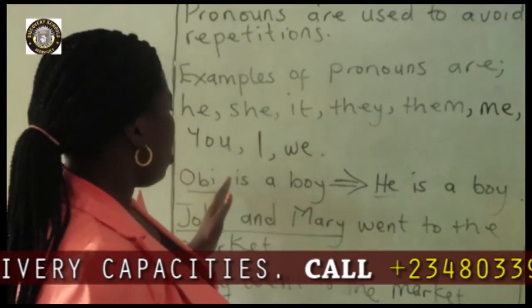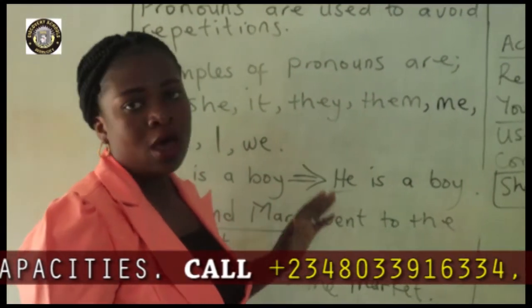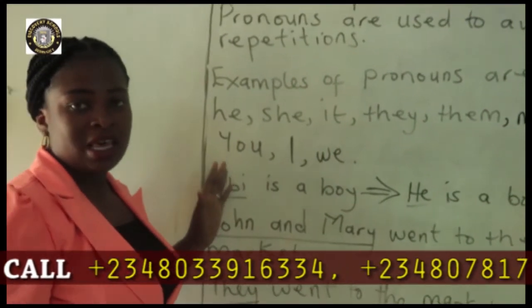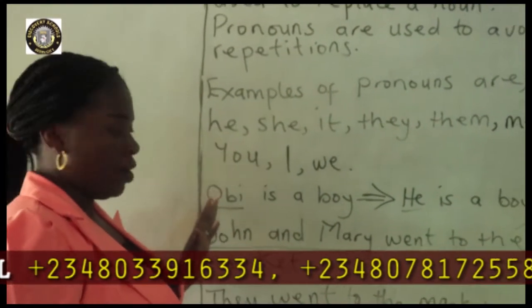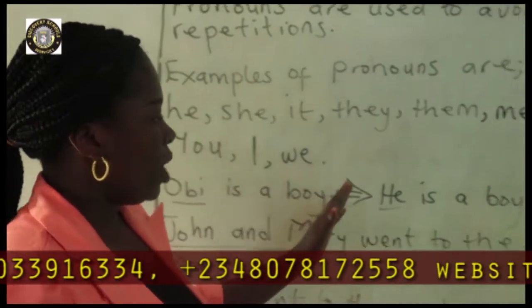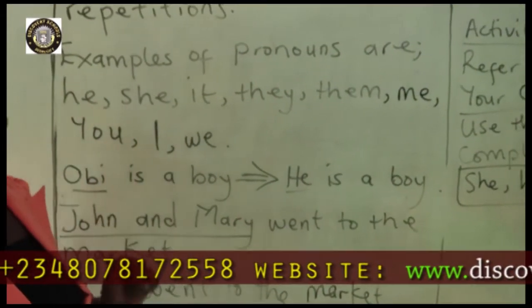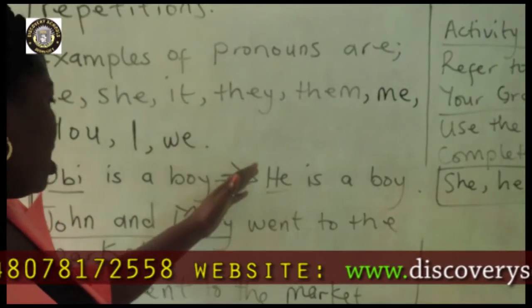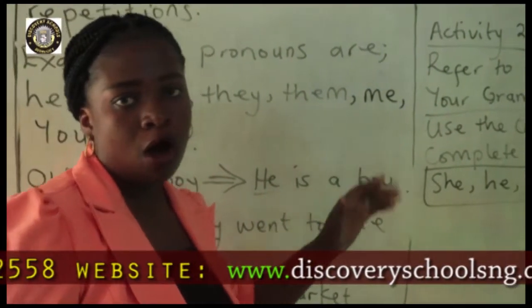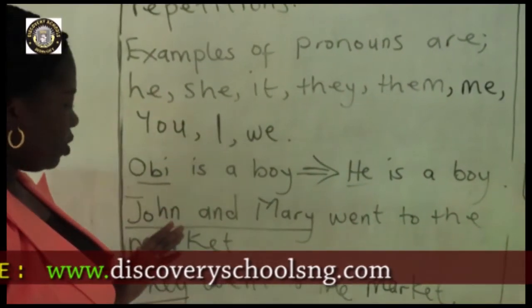Example: Obie is a boy. Obie in this particular sentence is a noun. So when we use a pronoun to replace Obie, he becomes — he is a boy.